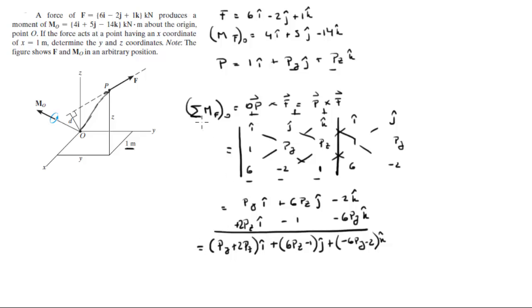This is the moment that the force creates about O, but the moment that the force creates about O is given right here. So on this side of the equation we put 4 in the i plus 5 in the j minus 14 in the k, which means that 4 is equal to this, 5 is equal to this, and negative 14 is equal to this.